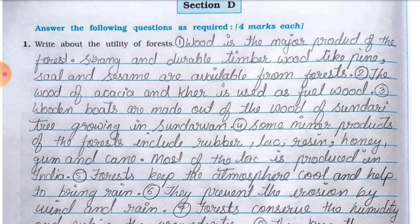Answer: point one, wood is the major product of the forest — strong and durable timber wood like pine, sal and sesame are available from forests. Point two, the wood of acacia and kher is used as fuel wood. Point three, wooden boats are made from the wood of sundari trees growing in the Sundarbans. Point four, some minor products of the forest include rubber, lac, resin, honey, gum and cane. Point five, forests keep the atmosphere cool and help to bring rain. Point six, they prevent erosion by wind and rain.